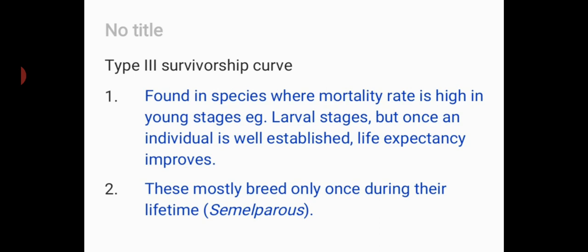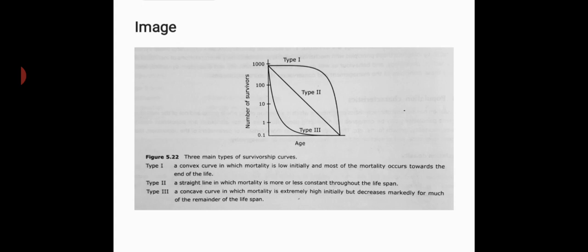Type 3 survivorship curve is a highly concave curve. It is found in those species in which mortality rate is high during the young stages. For example, oysters, in which mortality is extremely high in the free-living larval stage. But once the individual is well established, life expectancy improves considerably. Species showing this type of curve breed only once during their lifetime, a strategy known as semelparous.